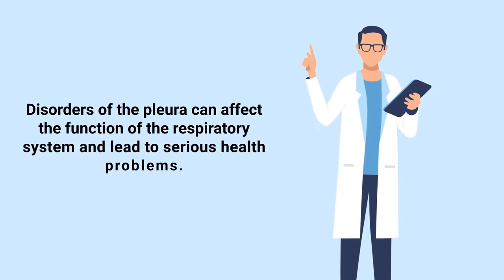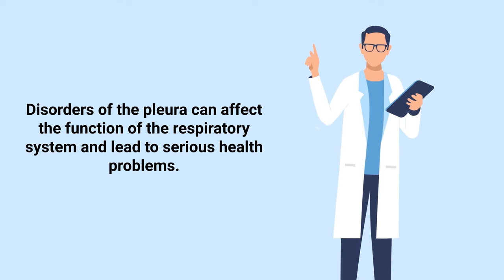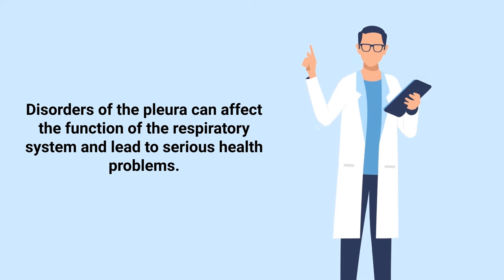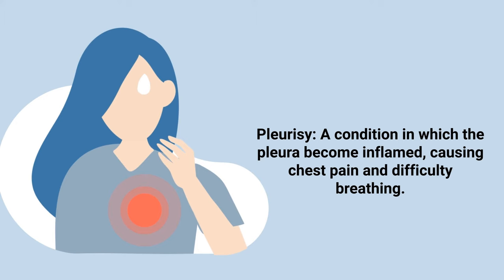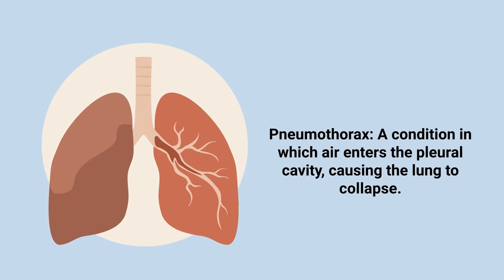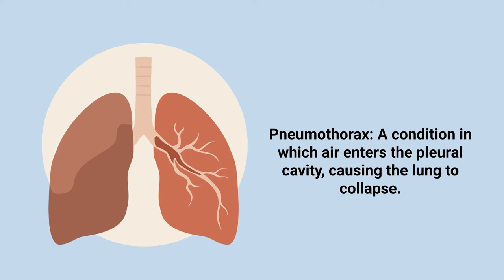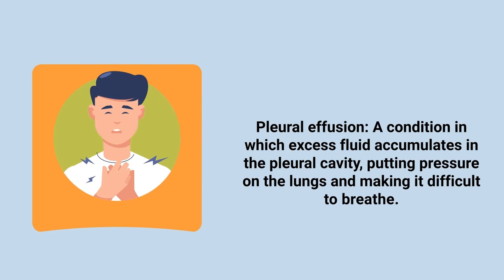Disorders of the pleura can affect the function of the respiratory system and lead to serious health problems. Some examples include pleurisy, which is a condition in which the pleura become inflamed, causing chest pain and difficulty breathing, and pneumothorax, which is a condition in which air enters the pleural cavity, causing the lung to collapse.